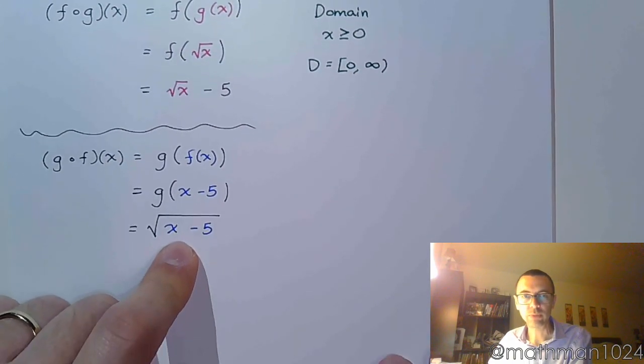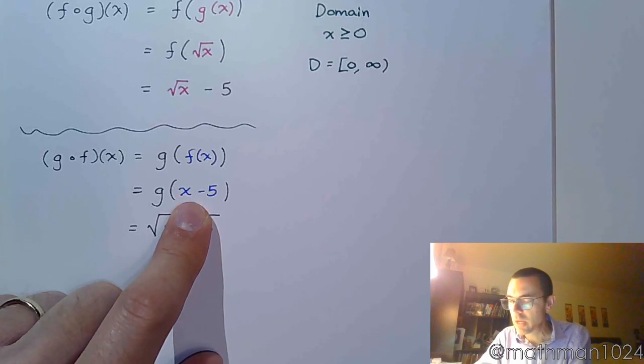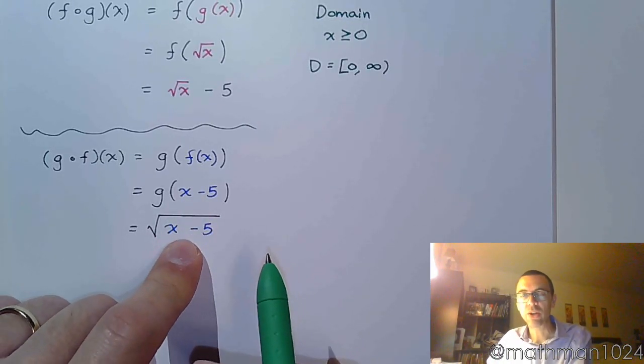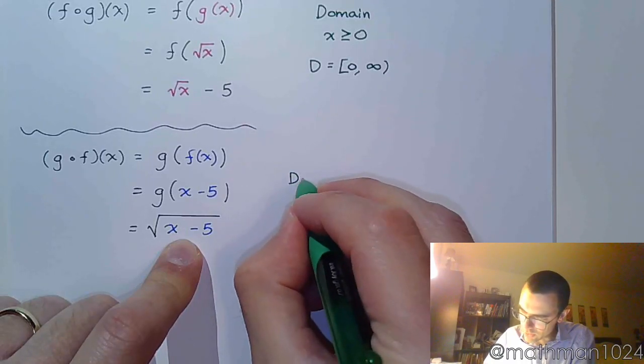For this one, x minus 5 didn't have any restrictions on its domain. His domain was all real numbers. But as soon as you put it inside here, now there are certain restrictions because it's inside of a square root.